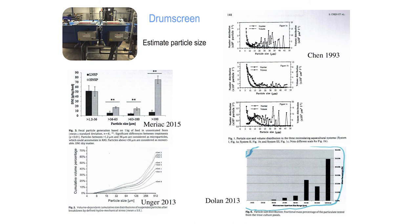The drum screen will be really easy in the model — it will just say everything above the mesh size is removed, everything beneath goes through. But you can also play around with the numbers. The literature isn't very sophisticated when it comes to drum screens: some say 10% of particles are smaller than your mesh size, but others tell me there are 50% smaller than my mesh size. Everyone is telling you something different, so you actually have to make a sophisticated guess — play around with the numbers and see what happens.